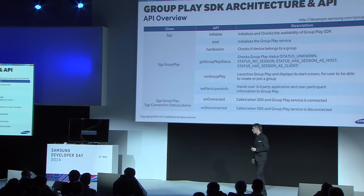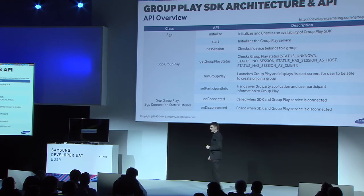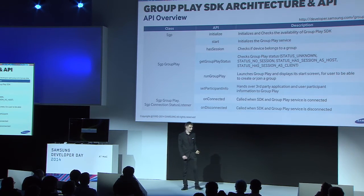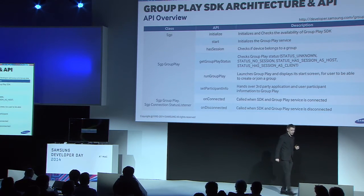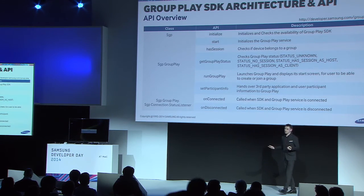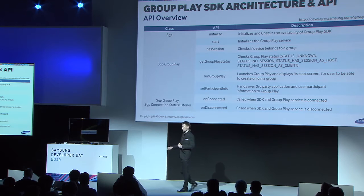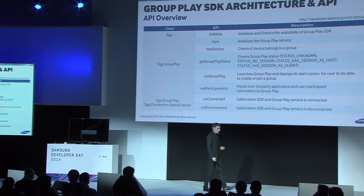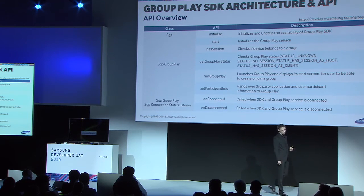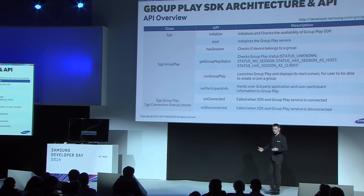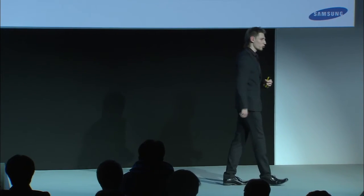I will only talk about the most important methods — you can check the documentation for a full overview. Let's take a look at the initialize method from the SGP class. It checks if the device supports the Group Play SDK; if not, it will throw an exception. Then there is the start method from SGP GroupPlay, which warms up the Code SDK, creates the channel, and initializes the data the Group Play SDK requires. Then the run group play method, which sends an intent to launch the create-and-join screen of the Group Play application, allowing the user to create or join a group.